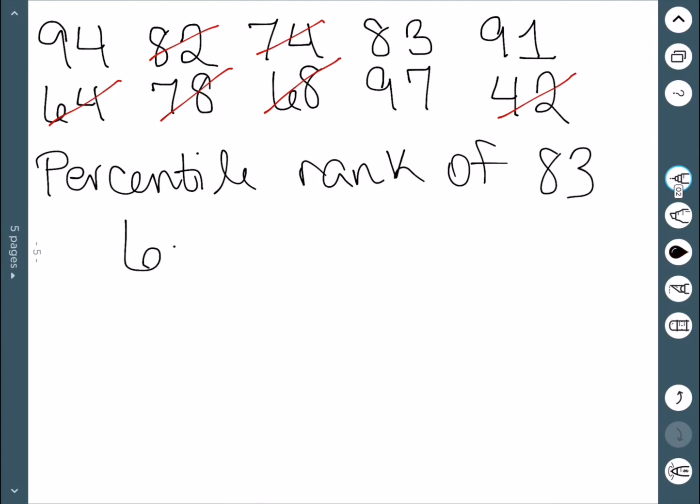Therefore, I take 6 plus 0.5, and I divide by the total number of data points I have, which is 10. Then to get this in terms of a percentage, we will multiply by 100. When we do that, we get 65%. Therefore, the value of 83 is in the 65th percentile.